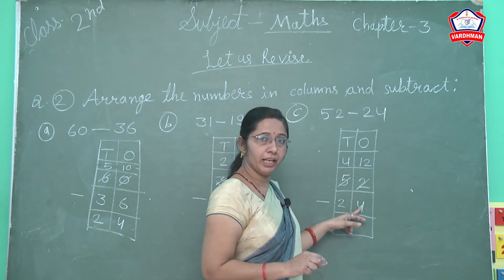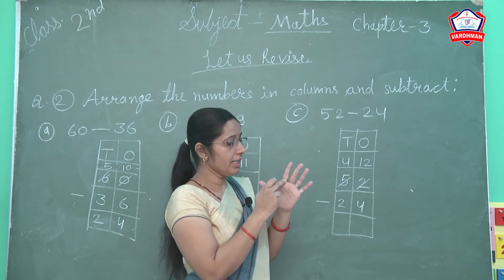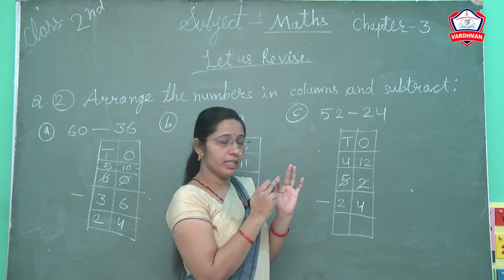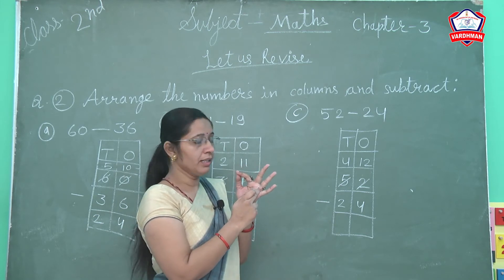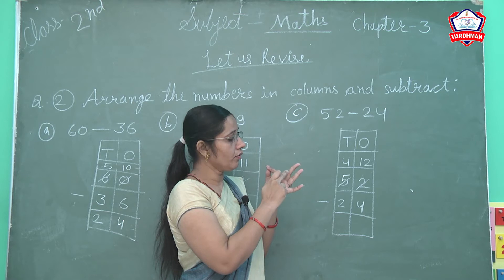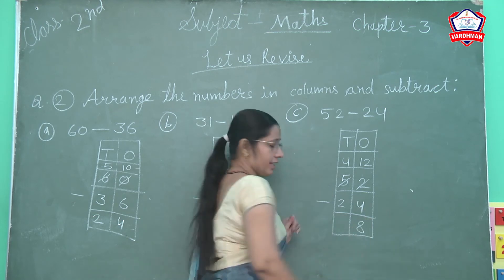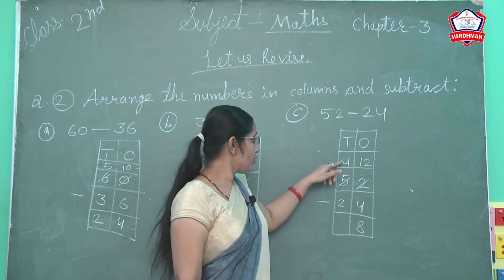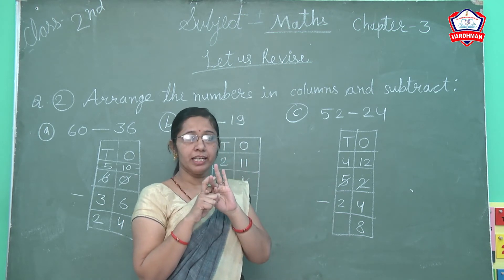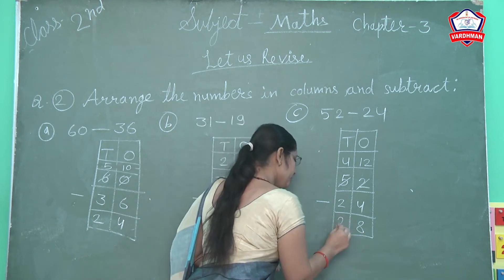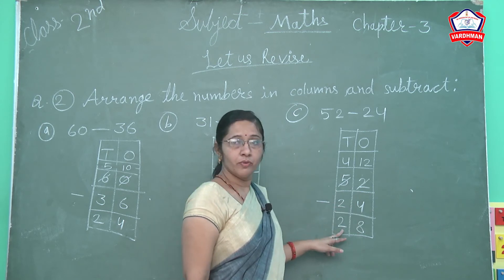Ab 12 mein se 4 cut karenge. Count 12 — 1, 2, 3, 4, 5, 6, 7, 8, 9, 10, 11, 12. We reach here. Cut 4 lines — 1, 2, 3, 4 — 4 lines is cut. Now count left lines — 1, 2, 3, 4, 5, 6, 7, 8. How many? 8. So write 8. Next is 4 minus 2. 4 mein se kitni less karni hai? 2 less ki hai, left is 2. So write 2. So 52 minus 24, the answer is 28.